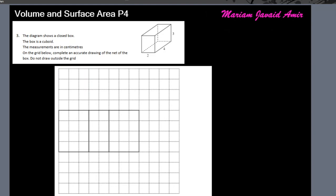Question number three: the diagram shows a closed box — a cuboid. The measurements are in centimeters. On the grid, complete an accurate drawing of the net of the box. Two rectangles are already drawn for us. There's a two-by-four rectangle and a four-by-three rectangle, with another identical one at the other end.